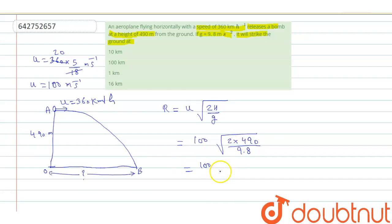So it becomes 100 root 4900 divided by 49. 2 cut with 98, that is 4.9. So it becomes 100, square root of 100 is 10, that is equal to 1000 meter. This is the horizontal distance, or we can say this is the range.